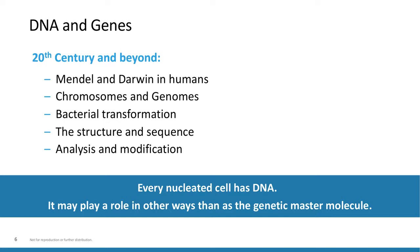We then discovered bacterial transformation. Griffith's group showed that dead bacteria could transmit genetic material to live bacteria, making them more virulent. We then determined the structure and sequence of DNA. Watson and Crick discovered the double helix structure in 1953, and we were then able to sequence the entire genome, completed in 2004. It cost $3 billion to sequence the human genome for the first time, but 10 years later it could be done for a million dollars, then under $1,000, and we're now approaching the under-$100 price point for whole genome sequencing — faster than the development in computers.